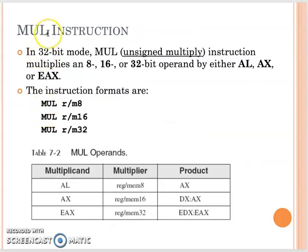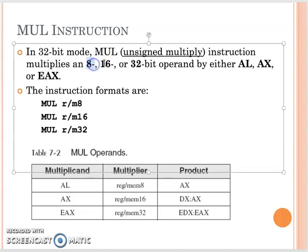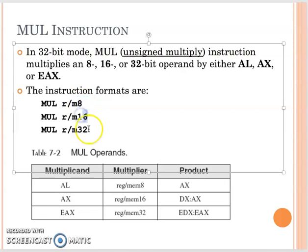The first thing we see is the MUL instruction. In the 32-bit environment, when we do the MUL instruction, it performs unsigned integer multiplication. According to your multiply operand, it can work on 8-bit, 16-bit, or 32-bit. The MUL instruction only has one operand, and that operand can be a register or memory operand — 8-bit, 16-bit, or 32-bit.